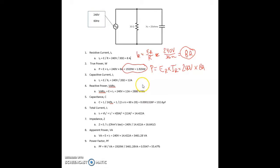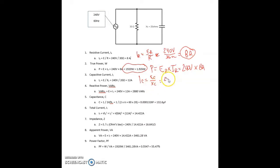For the current flowing through the capacitor, we're using Ohm's Law. Current through the capacitor equals the voltage drop across the capacitor divided by the capacitive reactance of the capacitor. In a parallel circuit, voltages are all the same, so 240 volts divided by 20 ohms equals 12 amps.